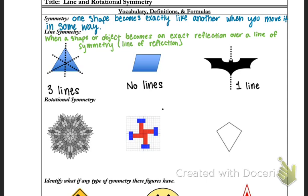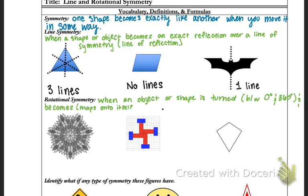Moving on to rotational symmetry. Rotational symmetry is when an object or a shape is turned between 0 degrees and 360 degrees and becomes exactly like the original. When I say becomes, I mean maps onto itself. So if I rotate, it's going to map right on top of itself.